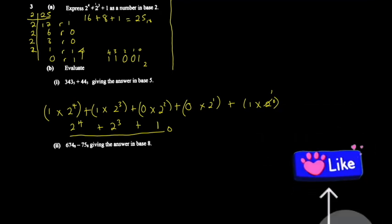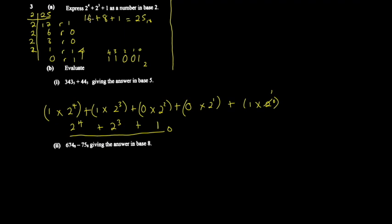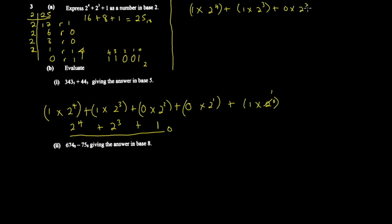By inspection, since we're in base 2, we collect the powers of 2. 2 to the power 4 is just 1 times 2⁴. Do I have 2 to the power 3? Yes — so plus 1 times 2³. Do I have 2 to the power 2? No — so 0 times 2². Do I have 2 to the power 1? No — so 0 times 2¹. Do I have 2 to the power 0? Yes — so 1 times 2⁰.